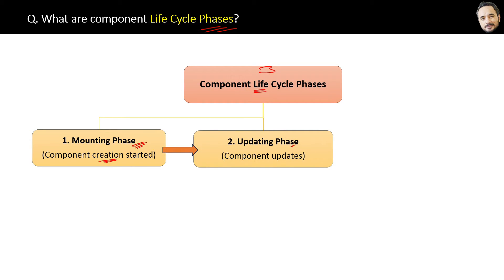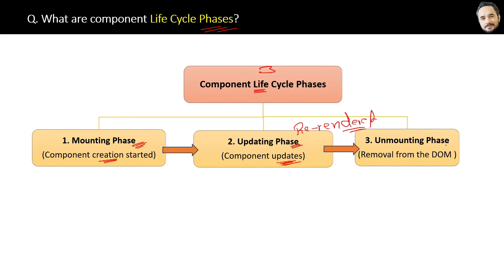The second lifecycle phase is the component updating phase. In this phase, if you change any property or state, then the component is being re-rendered because of that change. After the re-rendering, the component is again displayed to you — it's like you are just refreshing the component. This is the updating phase.